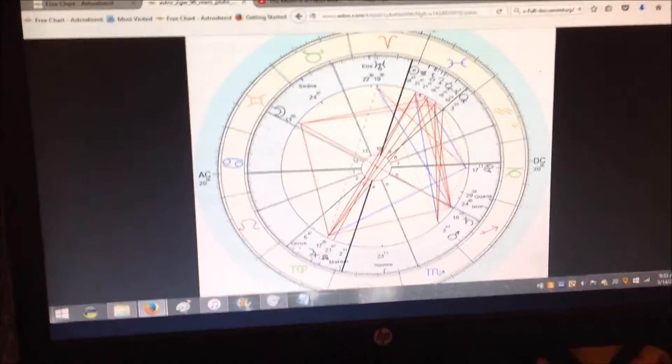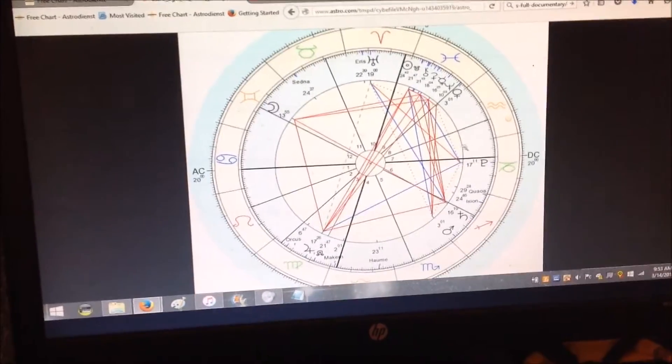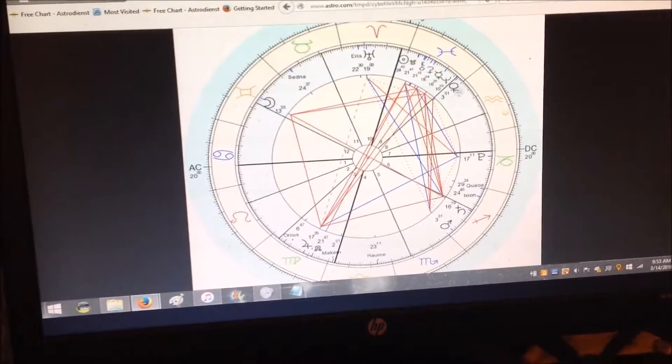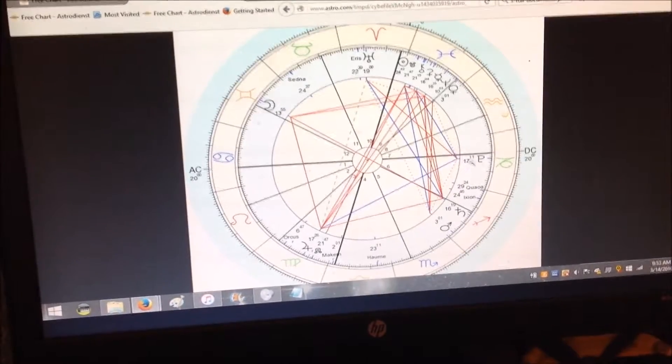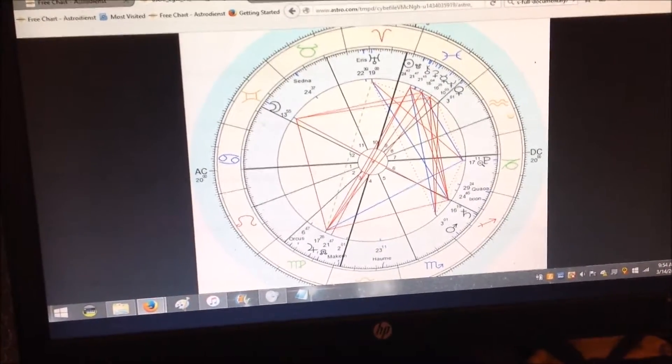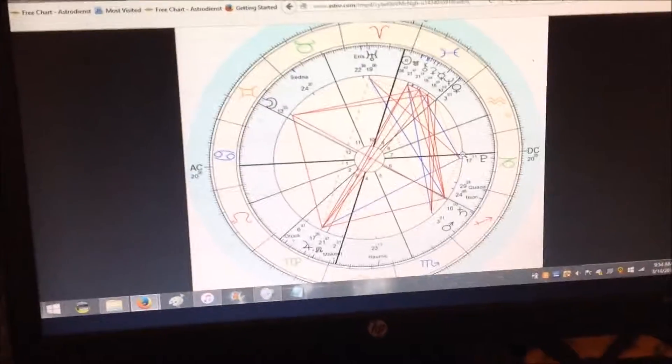This is extremely important. It makes it much different from just Venus square Mars. This is Venus square Mars, and Venus semi-square Pluto exactly, and Mars semi-square Pluto exactly. It just passed. It's peaking right now, exactly.